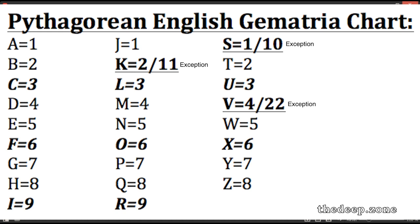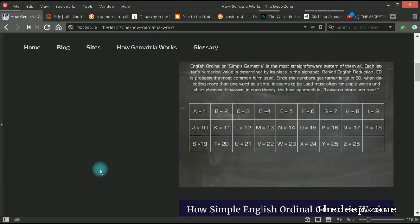Now, the other two exceptions that we're talking about are K and V. Now, why, why is that? Because, see, K is the 11th letter and V is the 22nd letter.